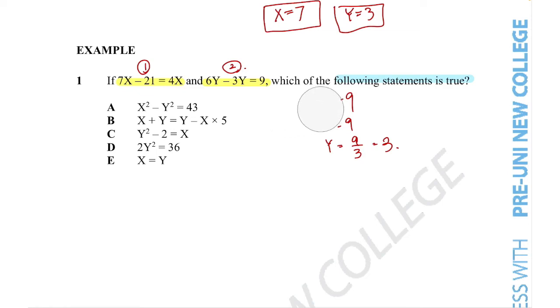So now we actually know what these letters represent. Now all we need to do is see which one of these answer options are true. So for answer option A, x squared minus y squared is equal to 43. This would have been difficult if we didn't know what these letters represented. But now we do. So all we need to do is substitute these letters directly into the equation. So if we substitute x is equal to 7, we get 7 squared minus 3 squared is equal to 43. 7 squared being 49 and 3 squared being 9. We can see that this answer is equal to 40, not 43. So this answer option cannot be true.